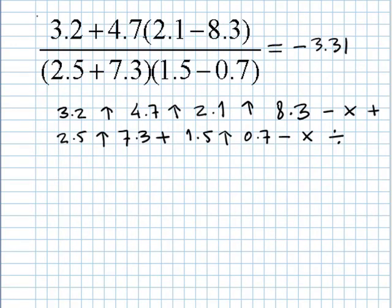An experienced operator of the RPN calculator would immediately say, hey, I can do this faster, pressing fewer keys if I start working on this parenthesis first. 2.1, enter, 8.3, subtract, 4.7, multiply, 3.2, add. And the numerator is ready.